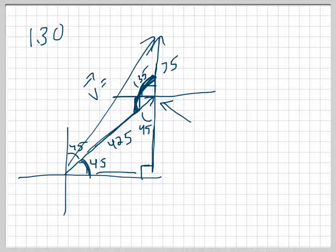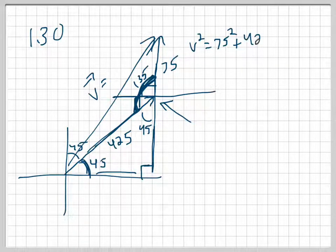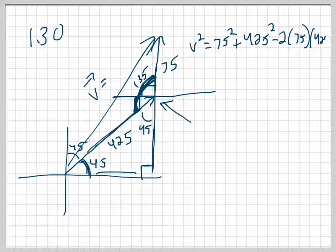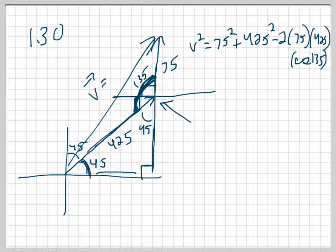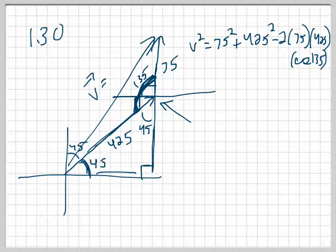V squared equals 75 squared plus 425 squared minus 2 times 75 times 425 times cosine of 135 degrees. You need to really practice making sure you can get that into your calculator correctly. So: 75 squared plus 425 squared minus 2 times 75 times 425 times cosine(135), then square root that, and I get a velocity of 481 kilometers per hour. You should definitely check on your calculators if you got that right.